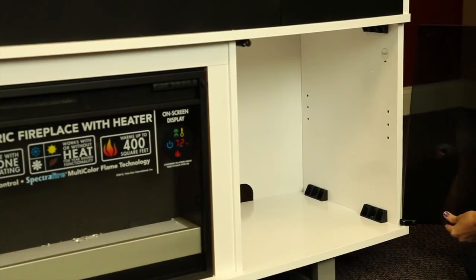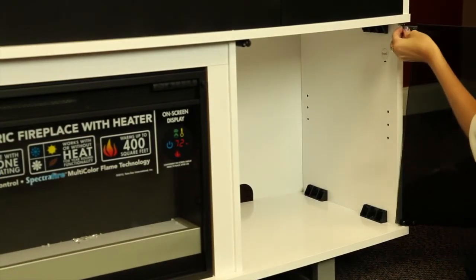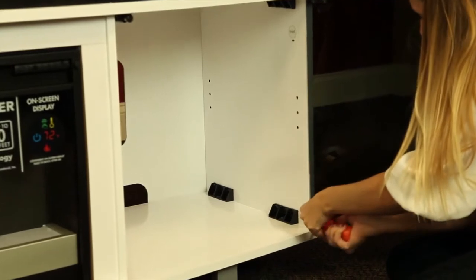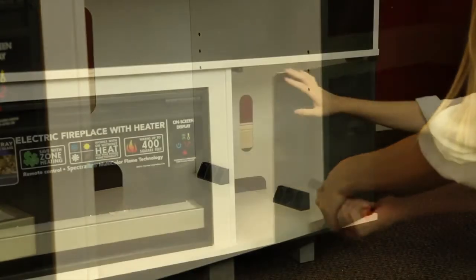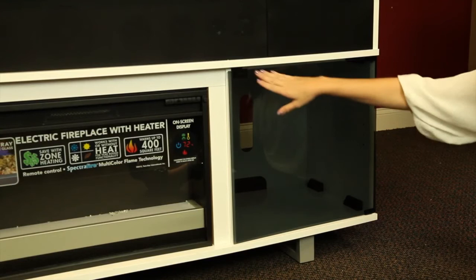Install the left and right doors using the included hardware. Set the hinges into the door frame, slide the glass doors in, and tighten the Phillips head screws. Open and close the door to ensure proper door function.